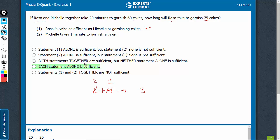Statement 2 says Michelle takes 1 minute to garnish a cake. So, once again, this will also be sufficient. This suggests that M is 1 and therefore, R must be 2.